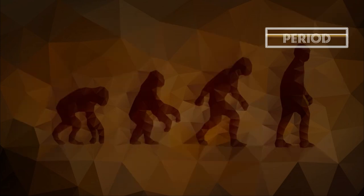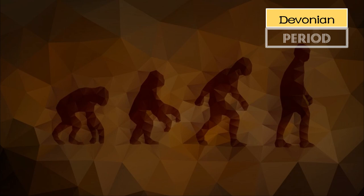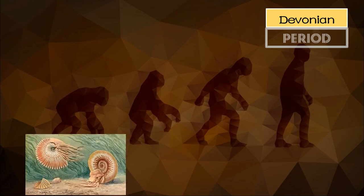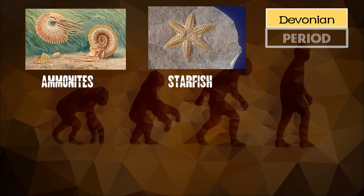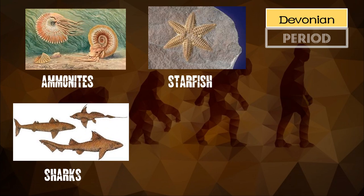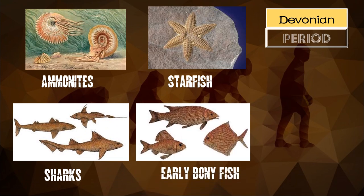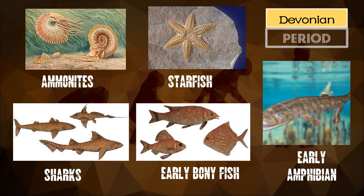We also have the Devonian period. It extended from 417 million to 354 million years ago. Living things under the Devonian period were ammonites, starfish, corals, crinoid stems, armored fish, sharks, early bony fish, and early amphibians.